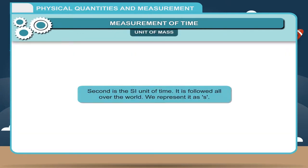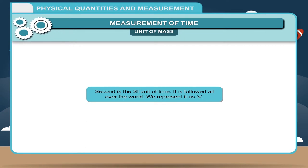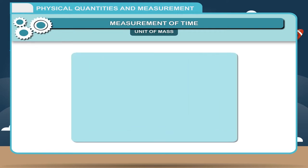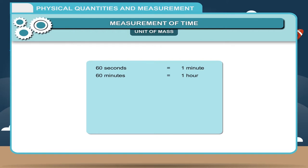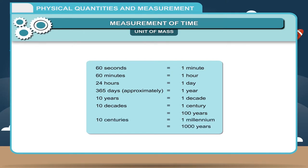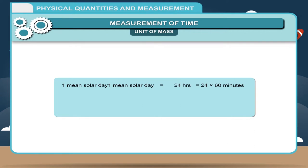Units of Time: Second is the SI unit of time, followed all over the world, represented as 's'. Relationship between different units of time: 60 seconds = 1 minute; 60 minutes = 1 hour; 24 hours = 1 day; 365 days (approximately) = 1 year; 10 years = 1 decade; 10 decades = 1 century = 100 years; 10 centuries = 1 millennium = 1000 years. One mean solar day = 24 hours = 24 × 60 minutes = 24 × 60 × 60 seconds = 86,400 seconds.